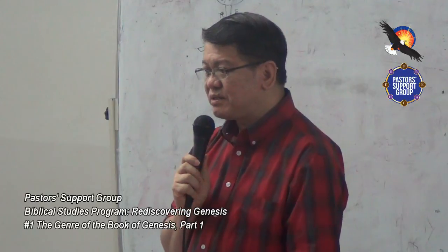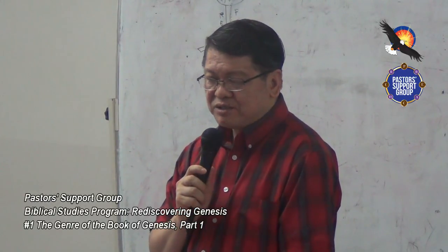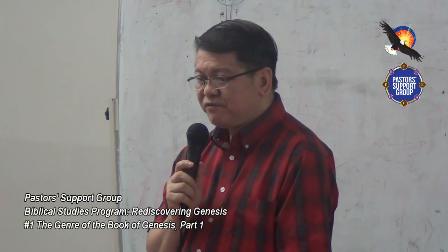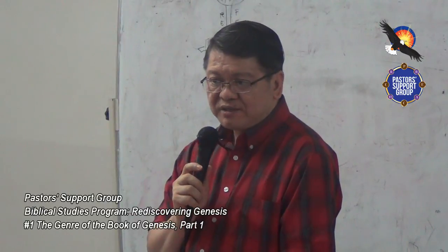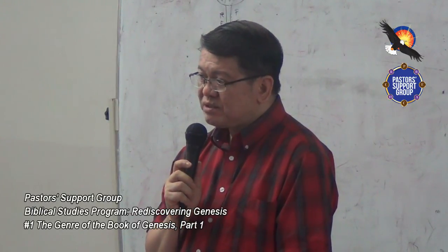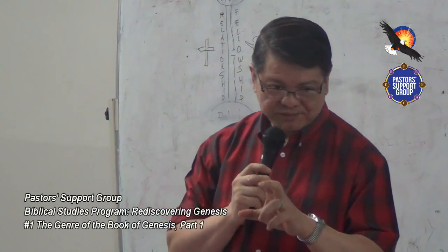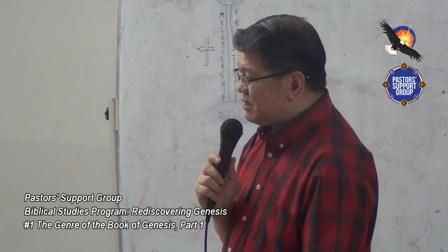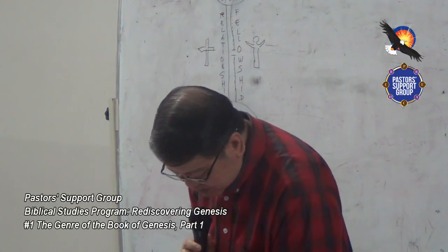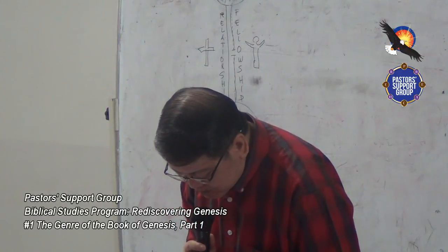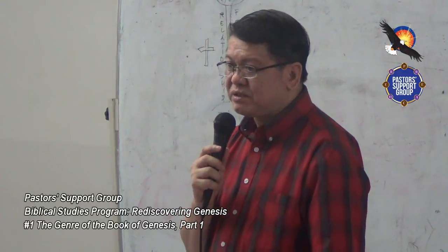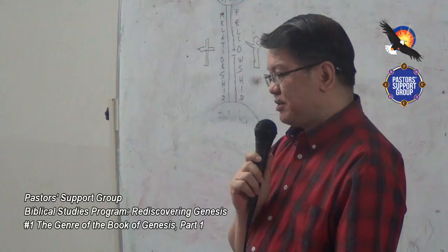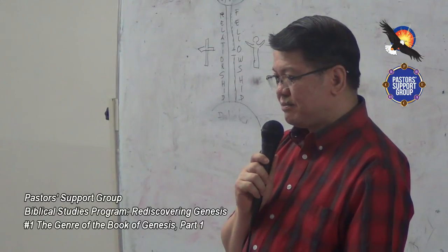As you look at Genesis, most of it consists of historical accounts — and we'll identify what kind. But there are also sub-genres within Genesis: certain parts are poetry embedded within an historical account. Genre — the literary form of a piece of literature — must be identified first. Identifying genre is the first step in interpretation, because the literary form determines the method of interpretation.